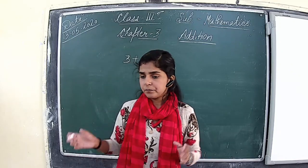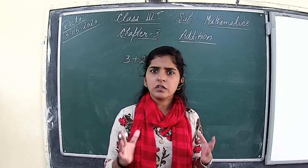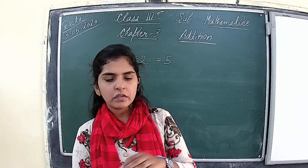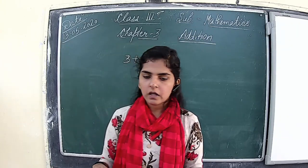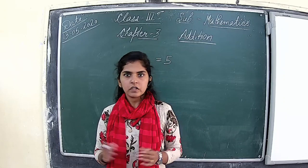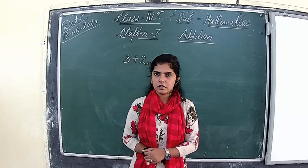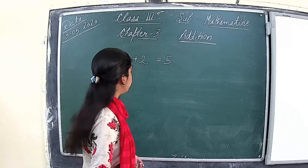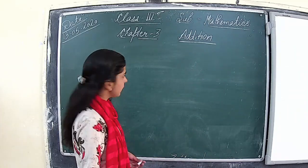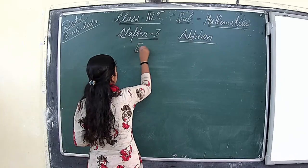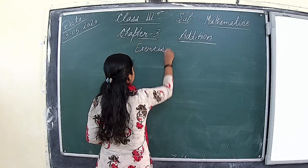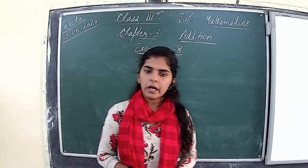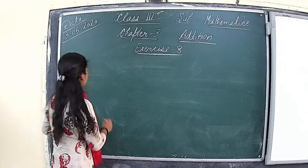Some Addition you have already studied in Class 2. In this class we will study generally 3-digit numbers and 4-digit numbers — Addition of 3-digit numbers and 4-digit numbers. So let's start Exercise number 8. I am taking question number 1: Add it together.